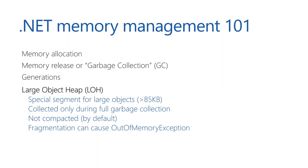There's also the large object heap — a special segment for large objects. If you have an array or string larger than 85 kilobytes, it's allocated on the large object heap. Those objects are more difficult to scan, so the GC only touches them during a full collection. It does not defragment the large object heap by default, which means if many large objects go out of scope, you can get an out-of-memory exception due to heap fragmentation.